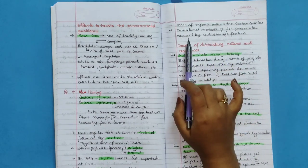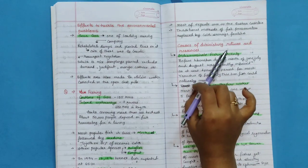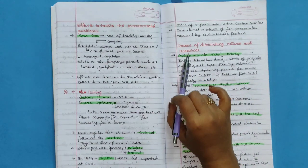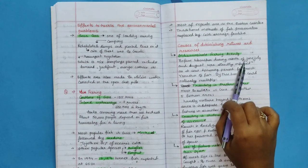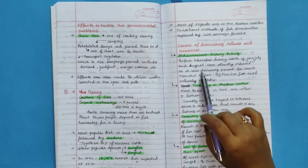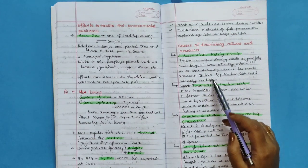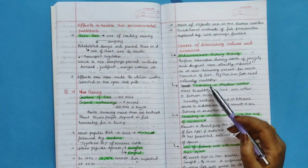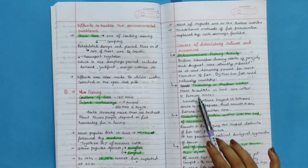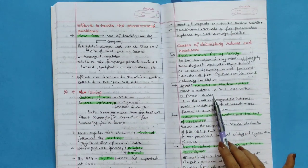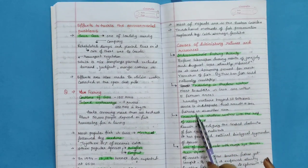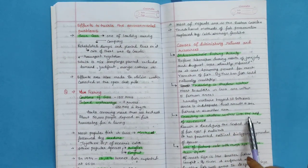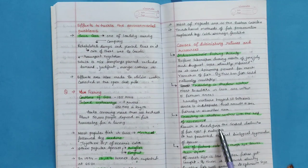Causes of diminishing returns and resources. Indiscriminate fishing activity. Before liberation during month of June, July, and August was strictly enforced as it was spawning period for most varieties of fish. By this ban, fish could naturally multiply. Trawling in shallow waters. Most trawlers in Goa are within 5-fathom area. Hardly ventures beyond 10-fathom area. This results in overfishing in shallow area.